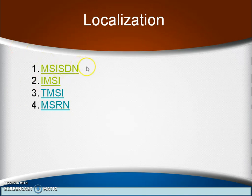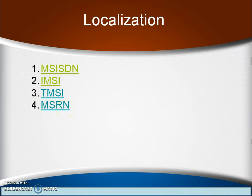To summarize: MSISDN is your mobile number. IMSI is the number used to locate the country and the mobile network operator. TMSI and MSRN are assigned temporarily by the VLR database for security reasons — to hide the subscriber's location. These numbers are used to locate the mobile station uniquely in the GSM network worldwide. Now let's visit how these numbers are used in the call establishment procedure.